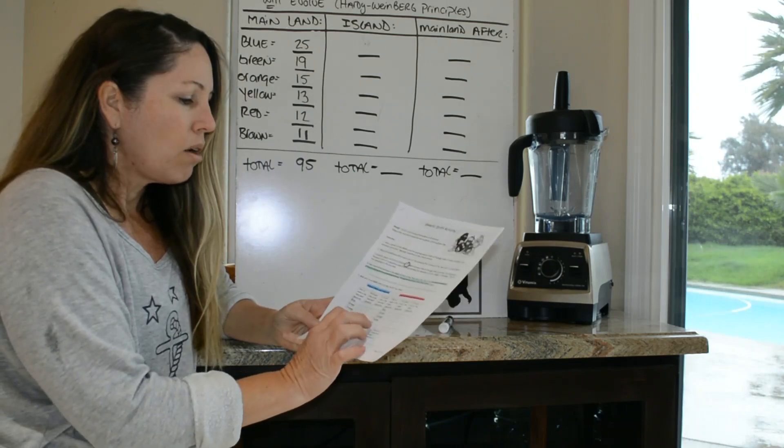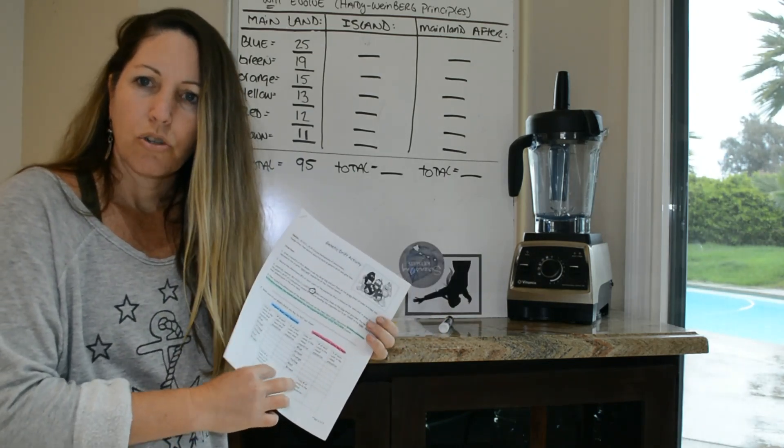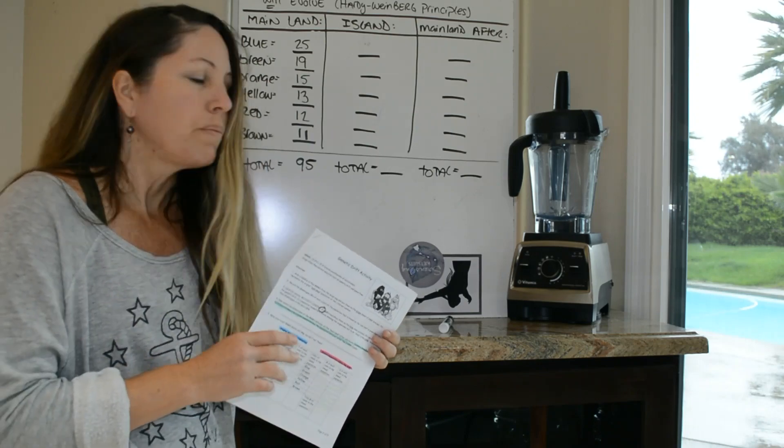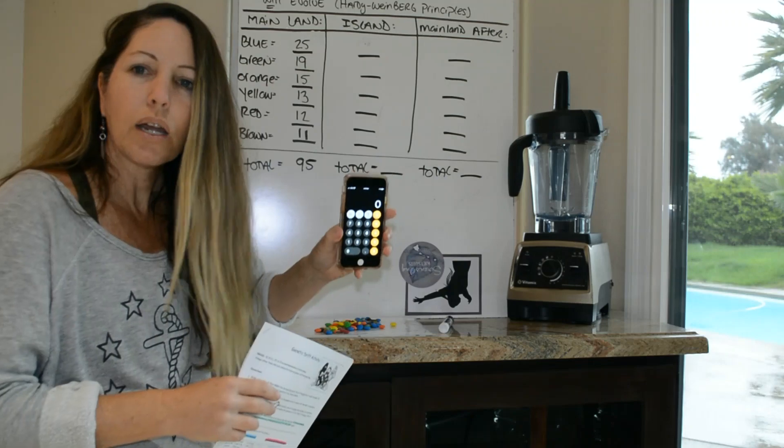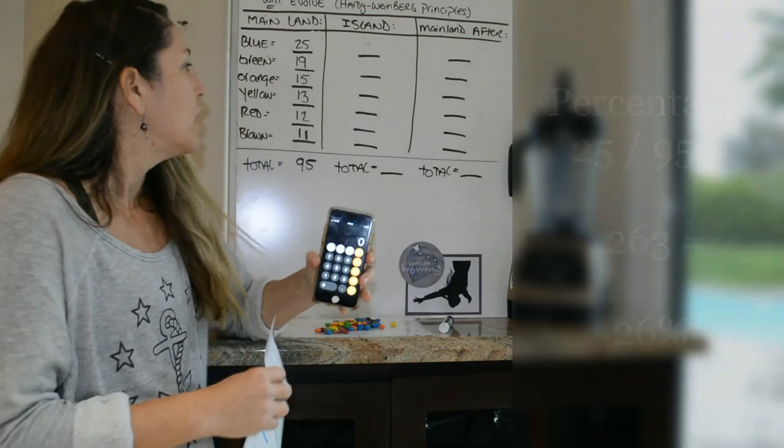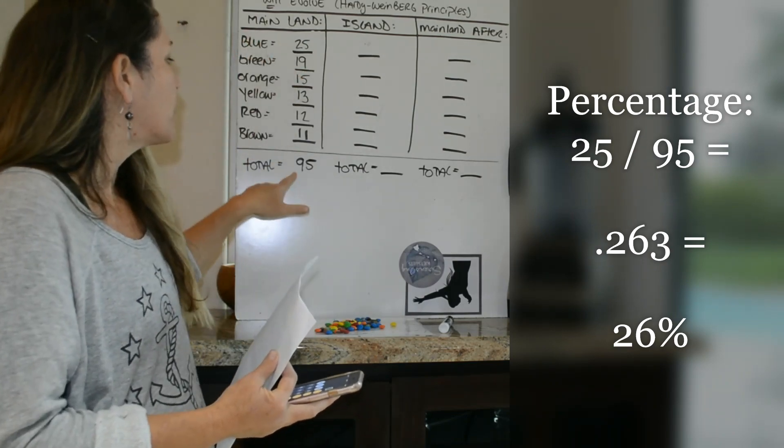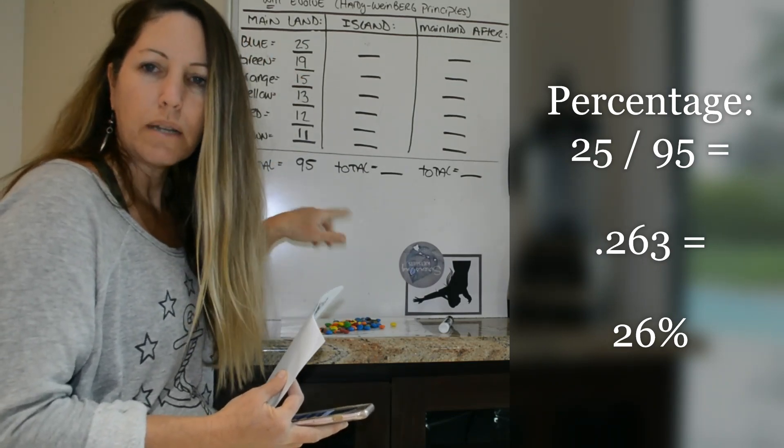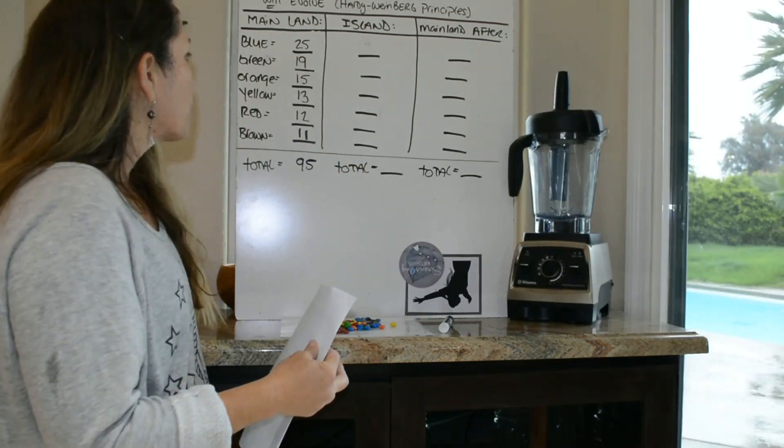Now the second column in your data table asks you guys for a percentage. So you are going to figure that out. Simply take your phone, and remember the percentage is the item divided by the whole. So 25 divided by 95 is what percent, and remember to move the decimal over twice. So once you guys figure out those percentages, then we're going to reenact genetic drift.